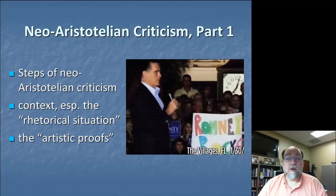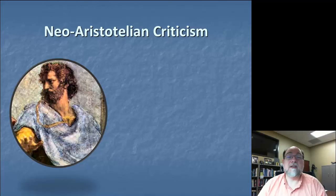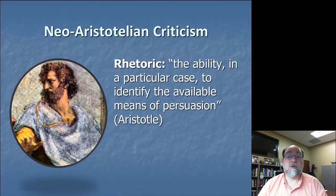The other element, which we'll talk about in part two, is the artistic proofs of persuasion according to Aristotle. But let's start at the beginning. What do we mean by neo-Aristotelian criticism? You can probably guess by the clever name that the notion comes from the theory of rhetoric provided by Aristotle in his treatise on rhetoric in ancient Greece.